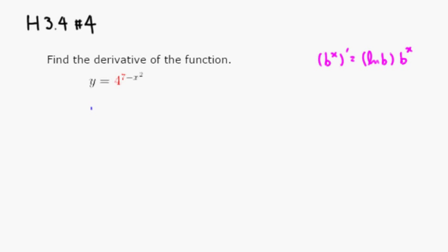Derivative of that. So y prime is going to be... we have to... so our outside function is 4 to the x. So it's going to be natural log of 4 times 4 to the...